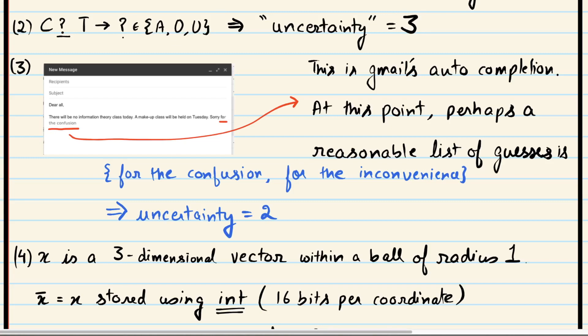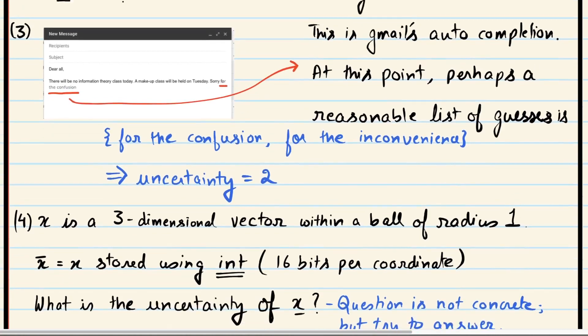Let's look at a slightly more complicated example — autocomplete in an email client. I use Gmail, and it tries to complete sentences for me. Here is a sentence: 'Dear all, there'll be no information theory class today. A makeup class will be held on Tuesday. Sorry for...' and then my client suggests 'the confusion.' There could have been various guesses — 'the confusion' was one, 'the inconvenience' was another. Perhaps those are the only two possibilities my email client had in mind, so its uncertainty is two.